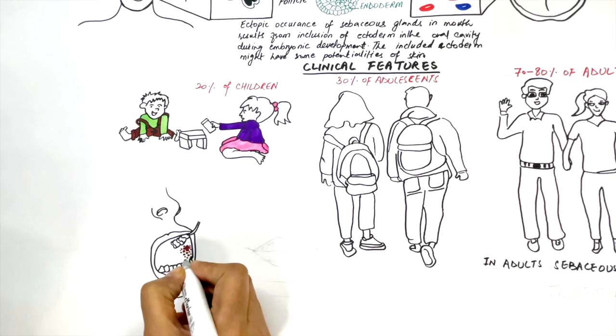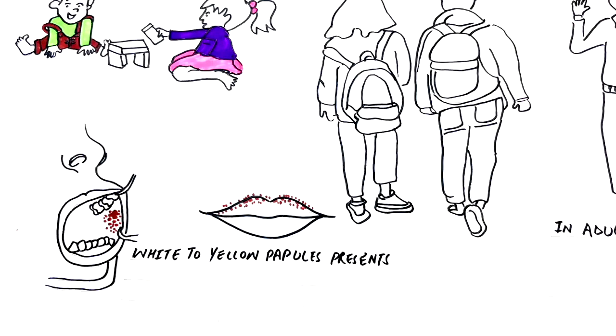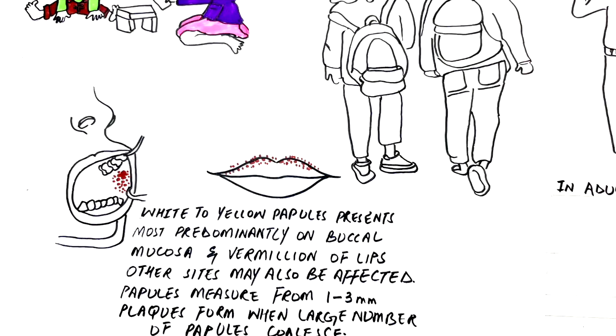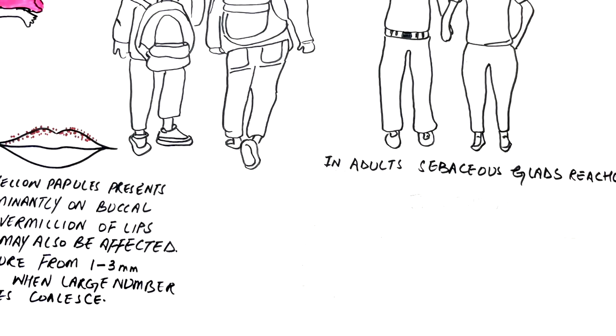Lesions appear as white to yellow papules visible through the transparent oral mucosa. Buccal mucosa and vermilion of lips are predominantly affected. Other sites like tongue, gingiva, and palate may also be affected. The papules measure 1 to 3 mm and may be clustered. When large numbers of sebaceous glands fuse together, they form plaques.